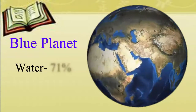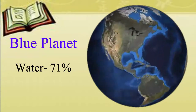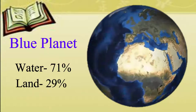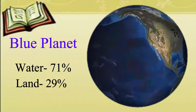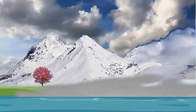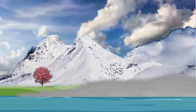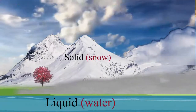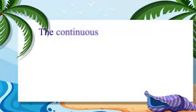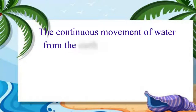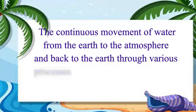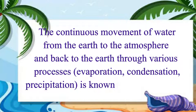The earth is called the blue planet because 71 percent of the earth is covered with water and the remaining 29 percent makes up the land. Water on the earth is found in three states: the solid, the liquid, and the gaseous state.